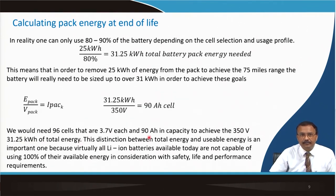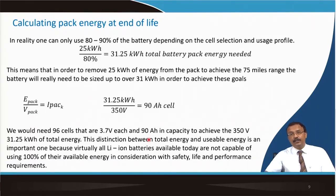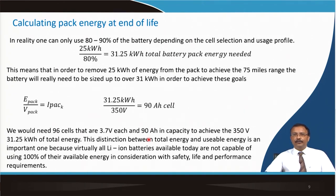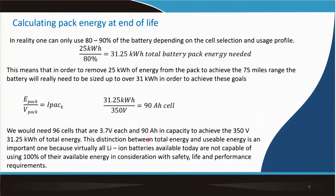The distinction between total energy and usable energy is important because virtually all lithium-ion batteries today are not capable of using 100% of their available energy, considering safety, life, and performance. Deep discharging causes problems — for example, lithium manganese oxide (LMO) positive electrode can provide extra discharge capacity below 3 volts, but doing so causes Mn²⁺ dissolution and Jahn-Teller distortion, blocking performance.